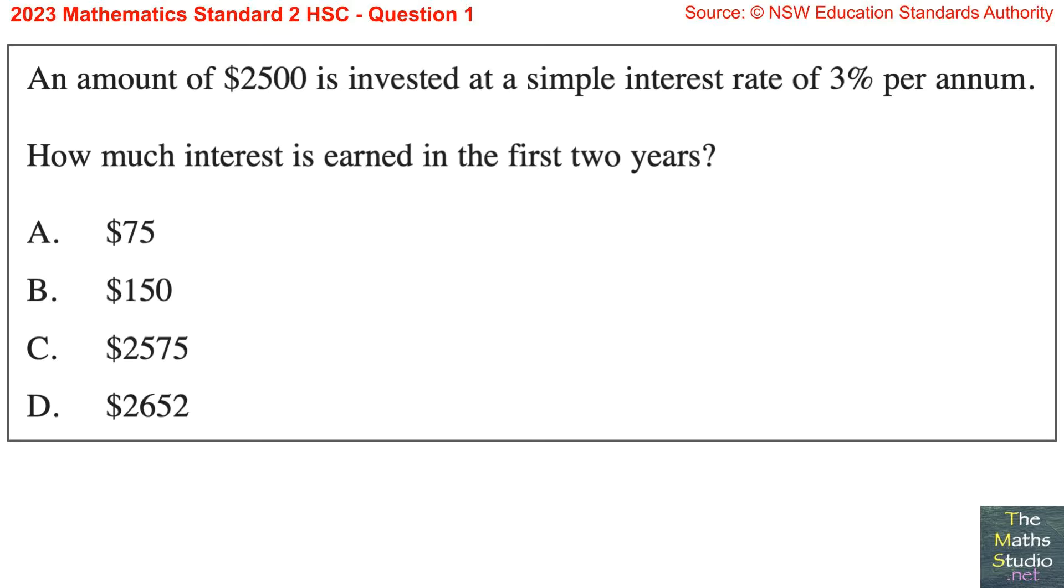Question 1. An amount of $2,500 is invested at a simple interest rate of 3% per annum. How much interest is earned in the first two years?